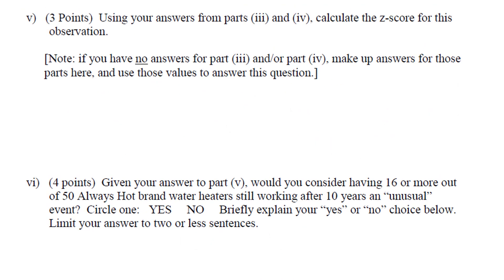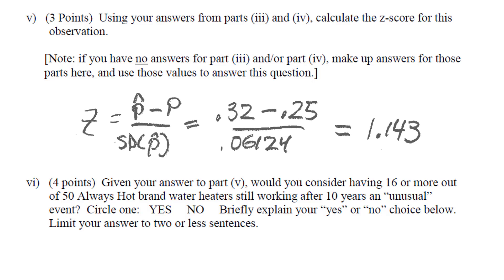Next, we need to find the Z score for our observation. So we need to do P hat minus P over the standard deviation of P hat. We found that P hat was equal to 0.32 and P is equal to 0.25. So let's divide this by our standard deviation and obtain our Z score.